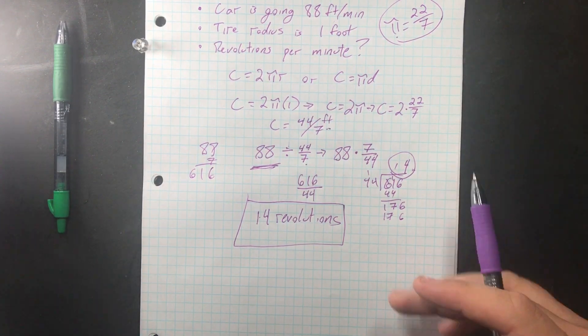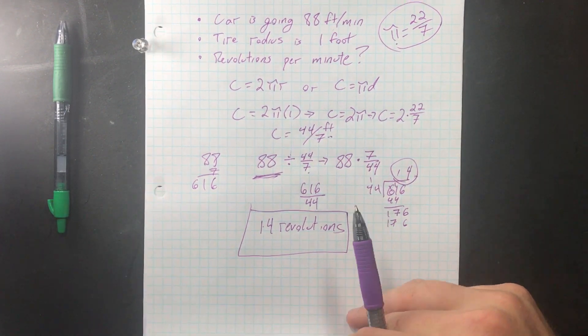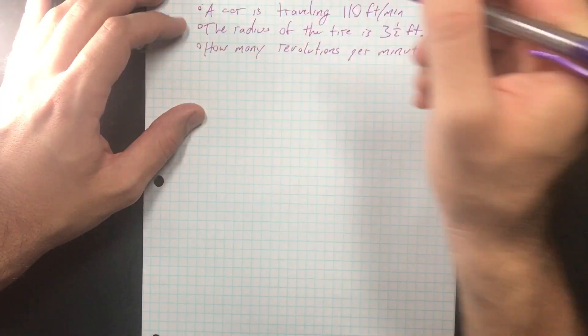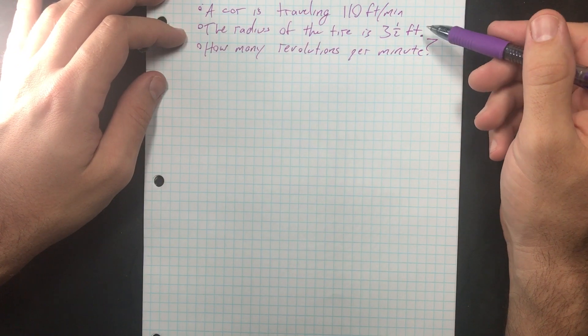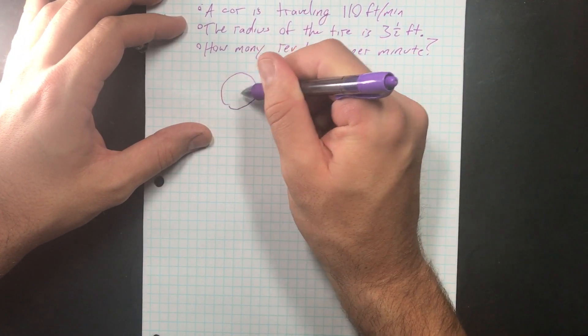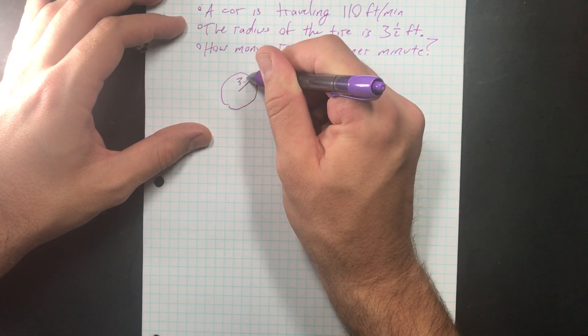So let's do another one just so you can see where the numbers aren't as straightforward. So let's first find what the circumference of this is, because we know the radius is 3.5.